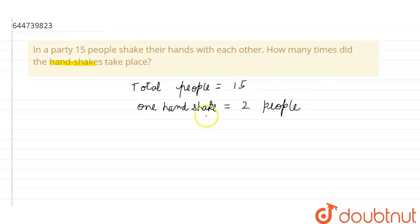So the number of handshakes will be—since there are 15 people and one handshake requires two people—it will be 15C2. Now we will solve it: 15 factorial upon 15 minus 2 factorial into 2 factorial.